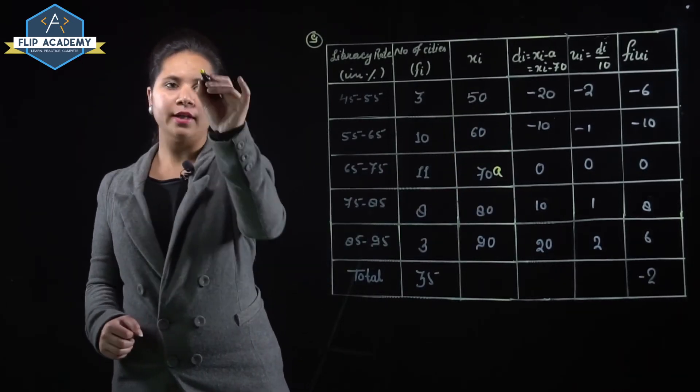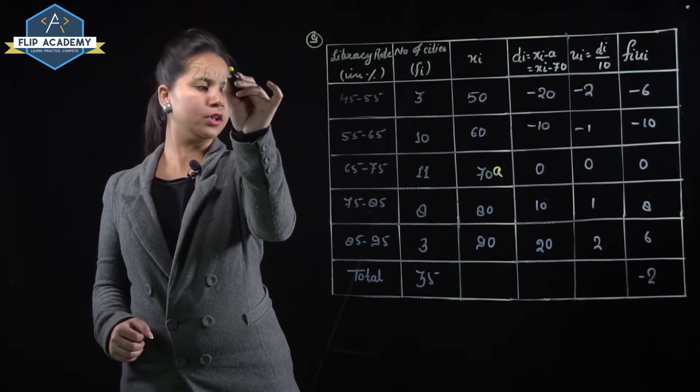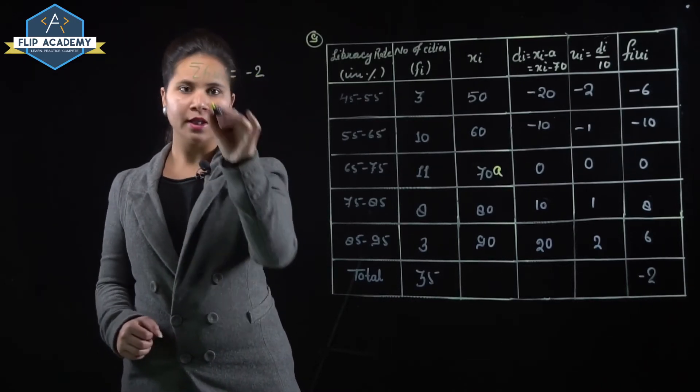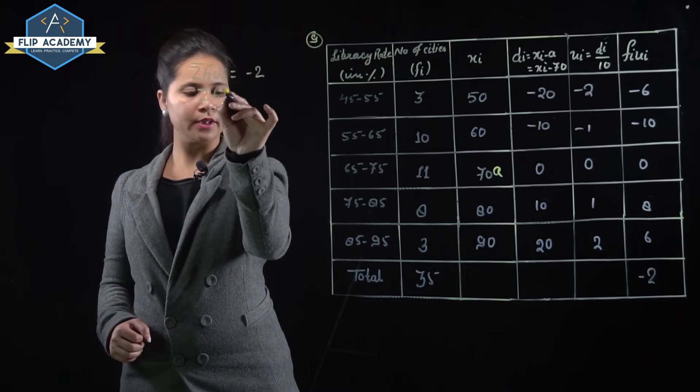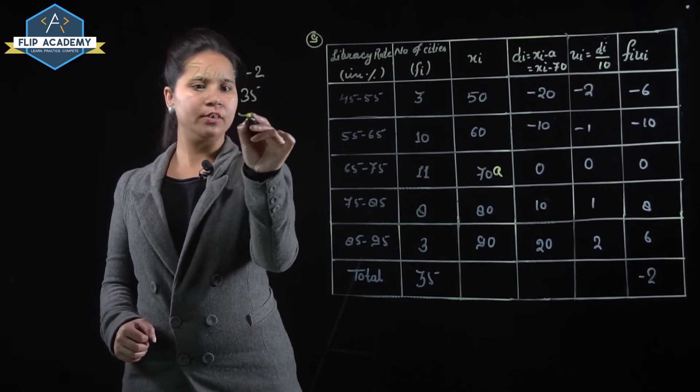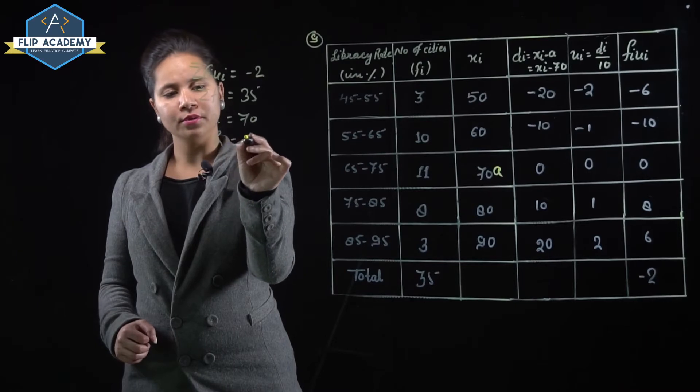Sum of fi ui: sigma fi ui equals minus 2. Sigma fi equals 35. A equals 70, and h equals 10.